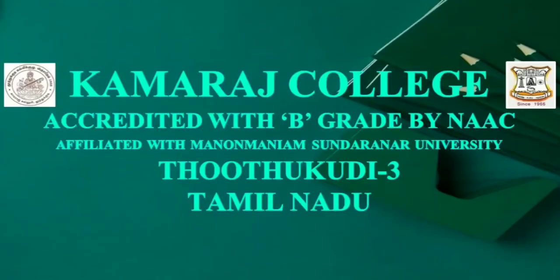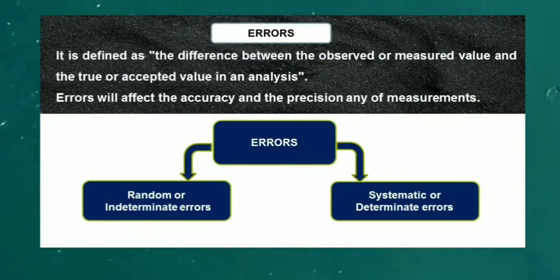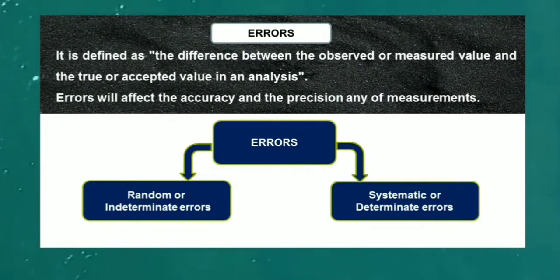Hello students, welcome to chemistry class. Today our topic is types of errors. The definition of error is the difference between the observed or measured value and the true or accepted value in an analysis.